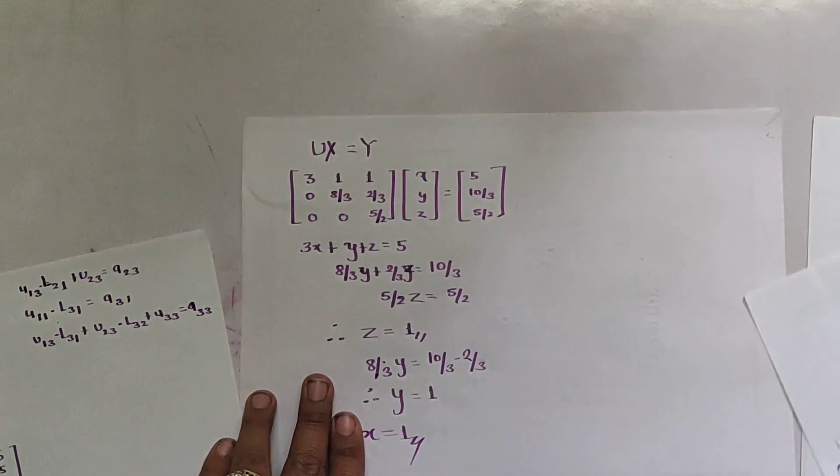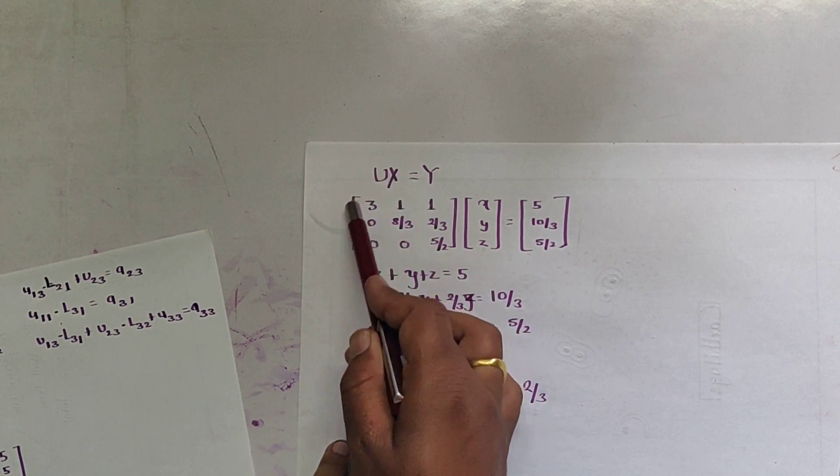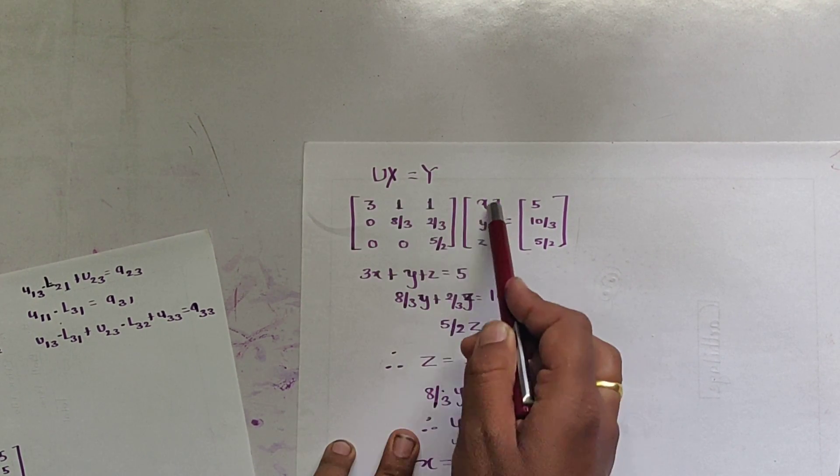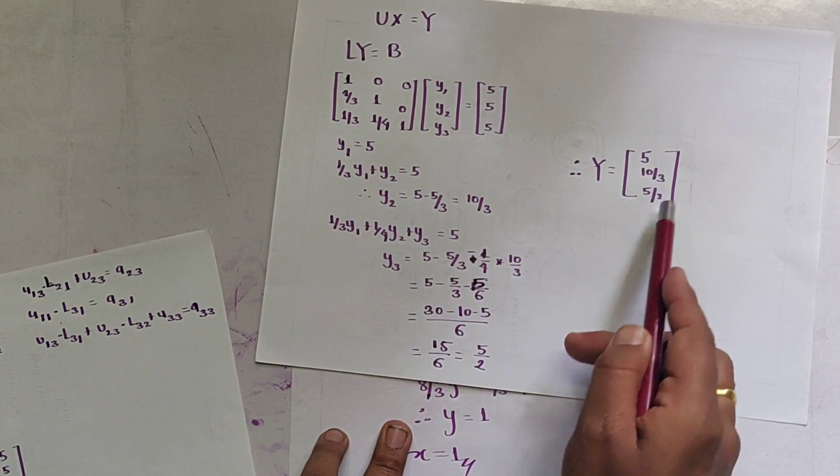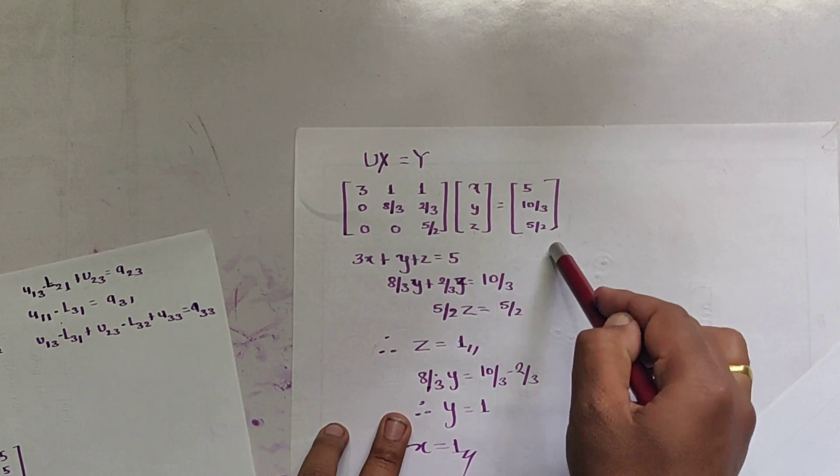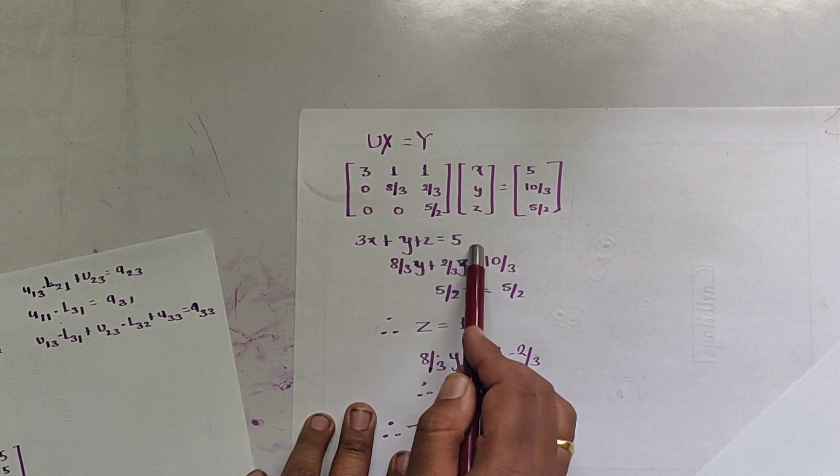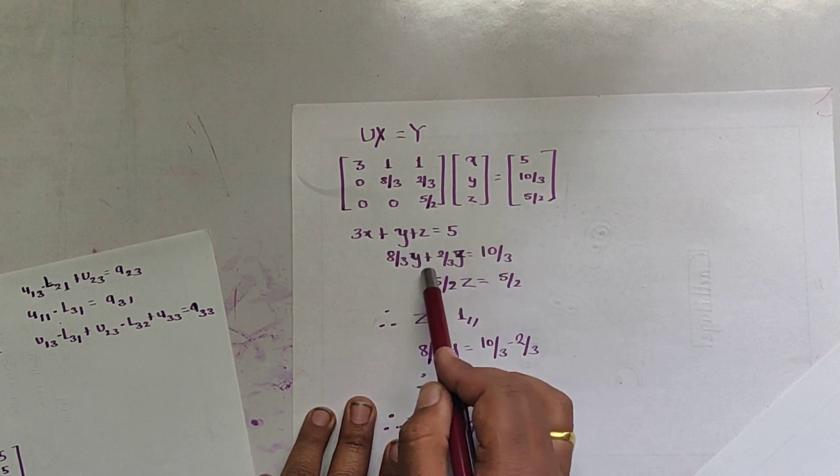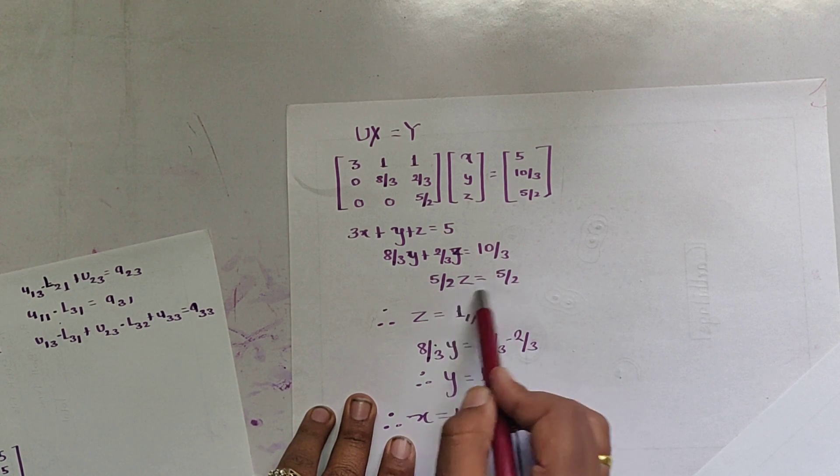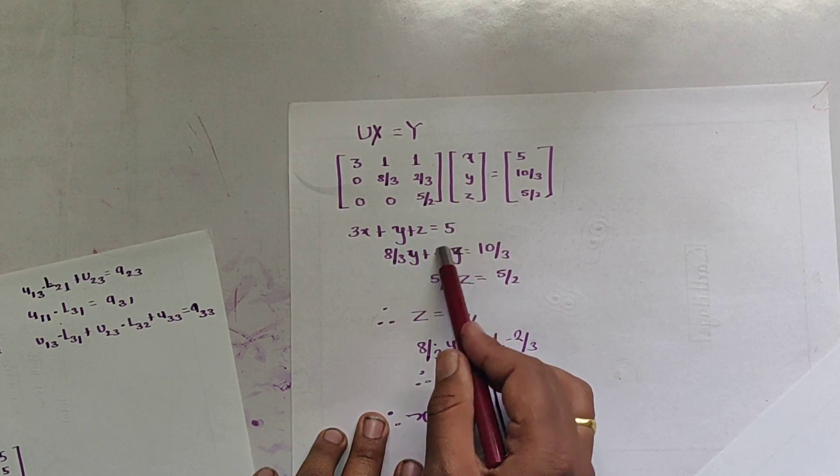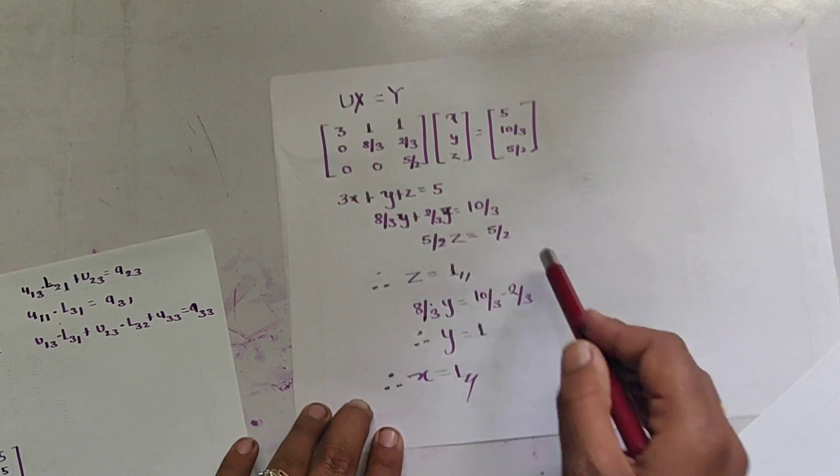Since UX is Y, this is upper matrix and this is the unknown variable. Y is found as 5, 10/3, and 5/2. Multiplying it, we get 3X + Y + Z = 5, (8/3)Y + (2/3)Z = 10/3, and (5/2)Z = 5/2. That means we get Z = 1. By substituting the value of Z in this equation, we get Y = 1, and similarly Y and Z in this equation, we get X = 1.